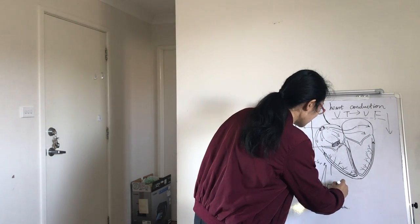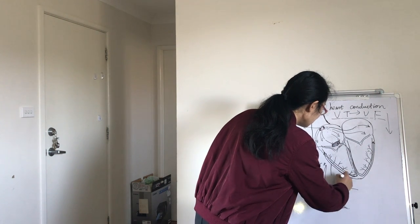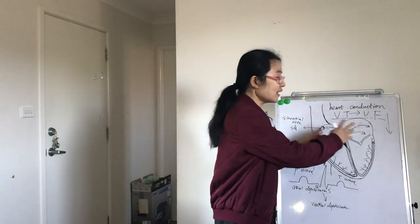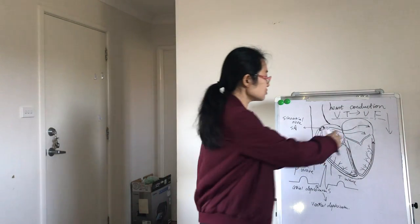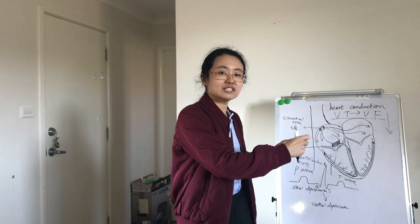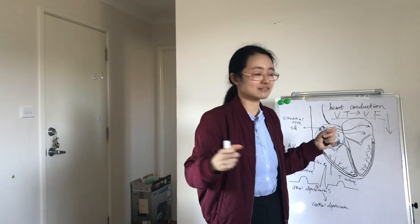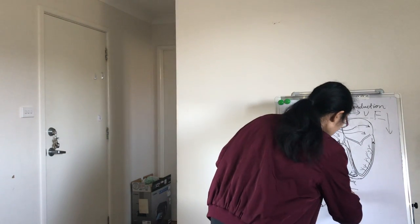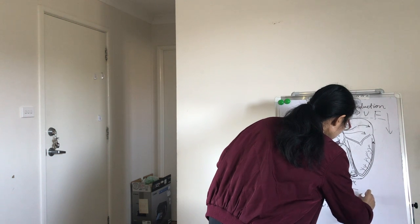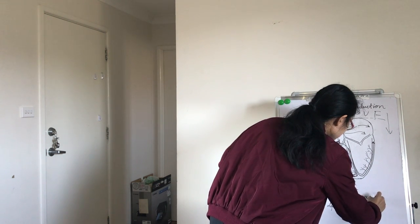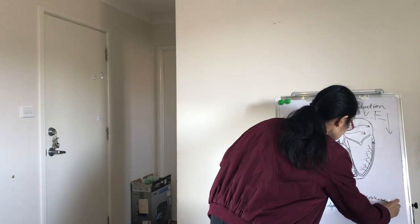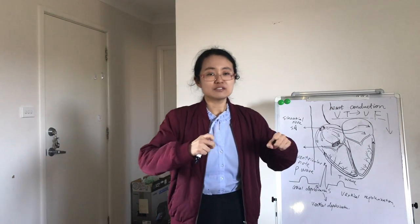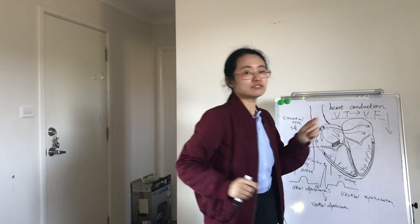Ventricular depolarization makes the ventricles contract and send out the blood. The next wave is the T-wave, which is the last section of the ECG. The T-wave represents the end of ventricular contraction — the ventricle stops contracting, finishes contraction, and then starts to relax. This relaxation is called repolarization, so it represents ventricular repolarization. After this, the ventricles start to relax and blood can fill back into the ventricles.